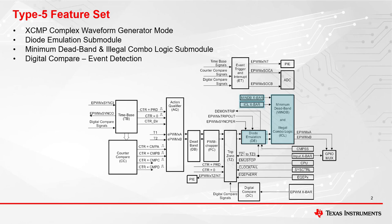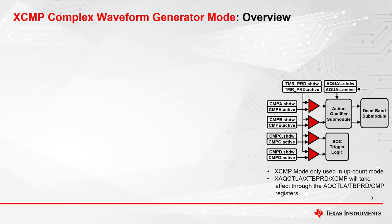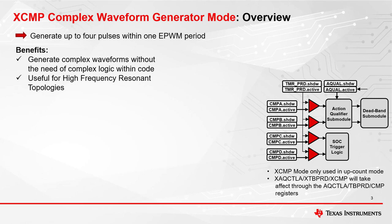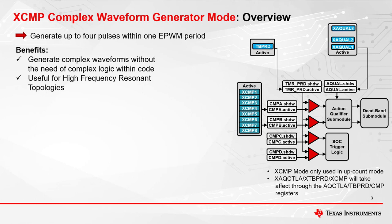Now let's dive into the XCMP waveform generator mode. The EPWM Extended Compare or XCMP complex waveform generator mode, when enabled, will provide a way to generate complex waveforms without CPU overhead. With XCMP mode, we can now generate up to four pulses within one EPWM period, which means we can increase our PWM frequency up to four times. Generating more than one pulse within a period is done through additional registers added for counter compare, time-based period, and action qualifier registers. CMPA and CMPB will share the eight extended or XCMP registers either by allocating all registers to CMPA or splitting the registers between CMPA and CMPB. There are also eight extended action qualifiers to configure an action to occur when the time-based counter is equal to one of the XCMP registers.